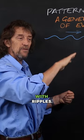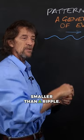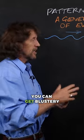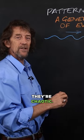It's the same with waves. They start off with ripples - you don't see anything smaller than a ripple. You can get blustery surfaces that don't really have a pattern, they're chaotic.